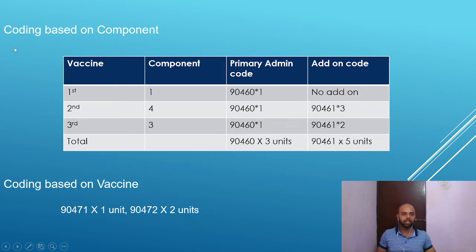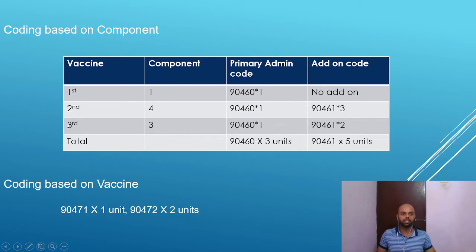In this slide I'll show you how to code for administration based on component as well as vaccine. Let's assume the patient age is between 0 to 18 years and counseling was given. There are three vaccines given, each with a different number of components. The first vaccine consists of one component.